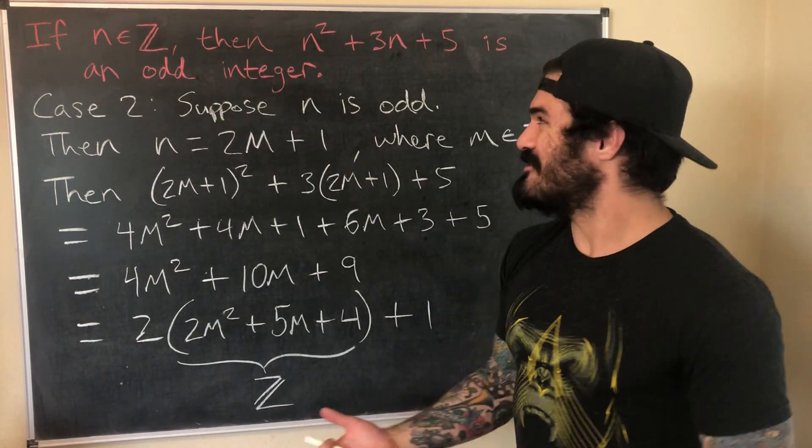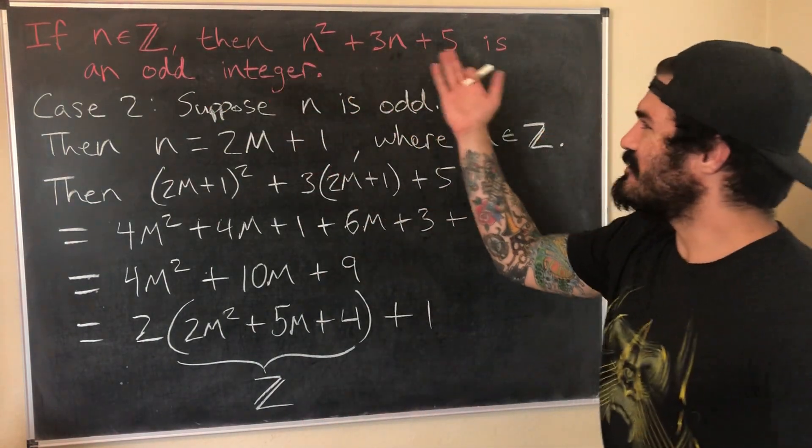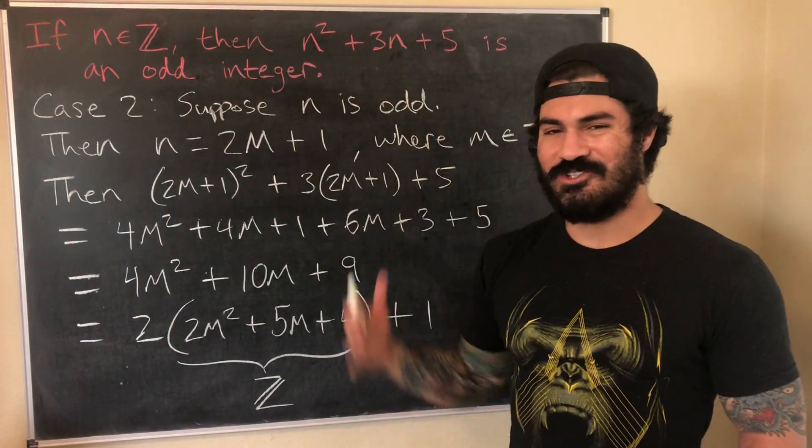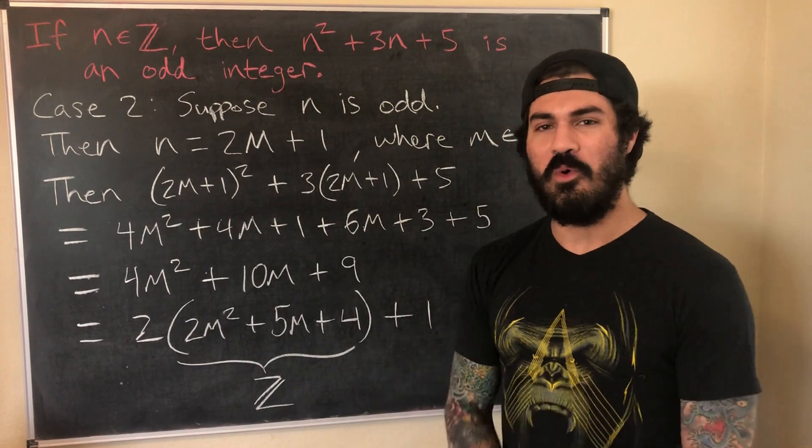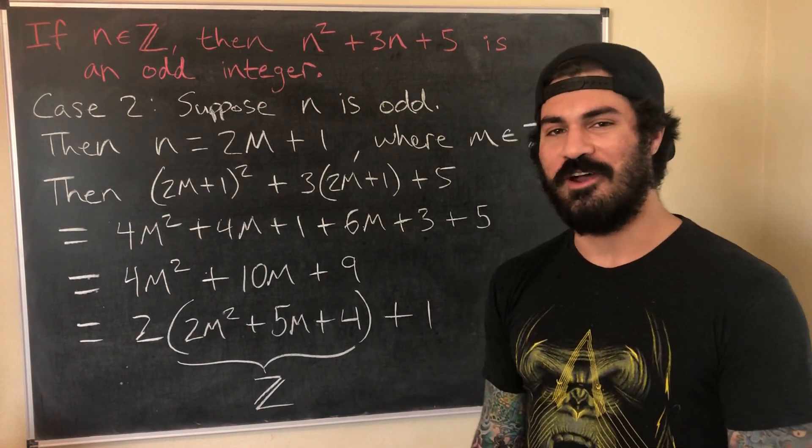We can think of this as proving two conditional statements: if n is even then the expression is odd, and if n is odd then the expression is odd. Since integers are either even or odd — the union of those two sets makes up all integers — therefore for any integer n, the expression n² + 3n + 5 is odd.